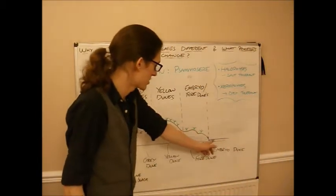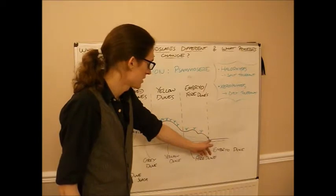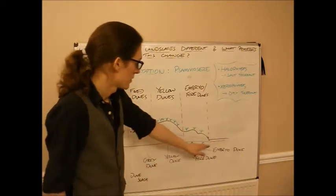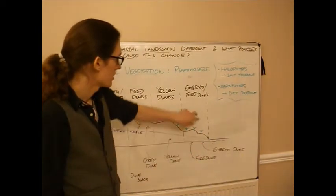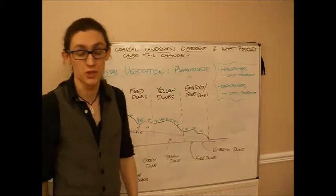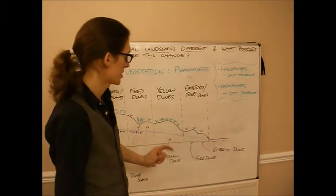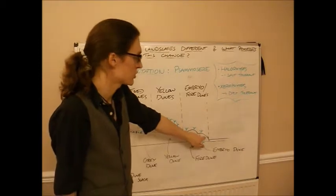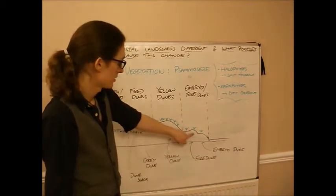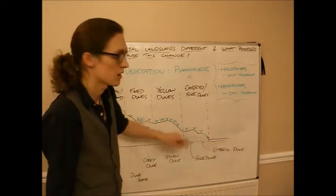So right up to where the sea meets the land here, first off we've got the embryo and fore dunes. This is the first section of the samosia. The embryo dunes are the very first dunes down by the sea, and the fore dunes come after it.